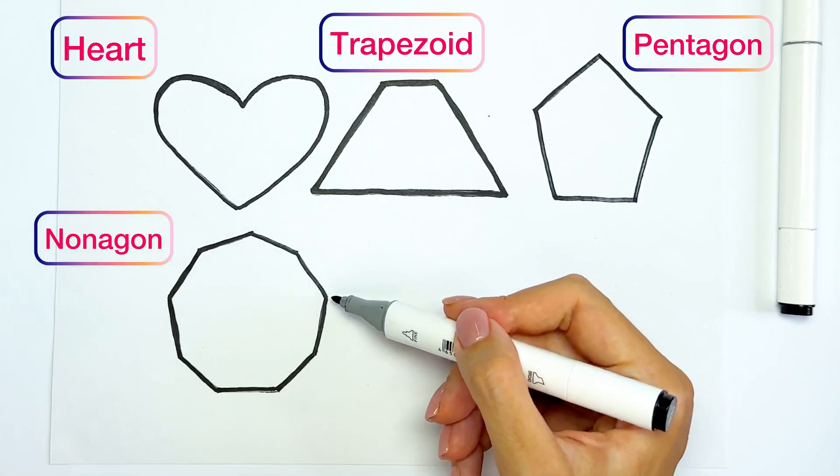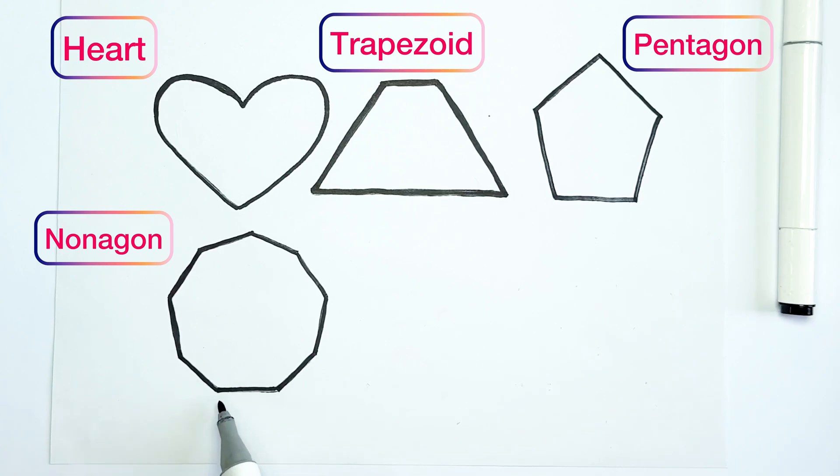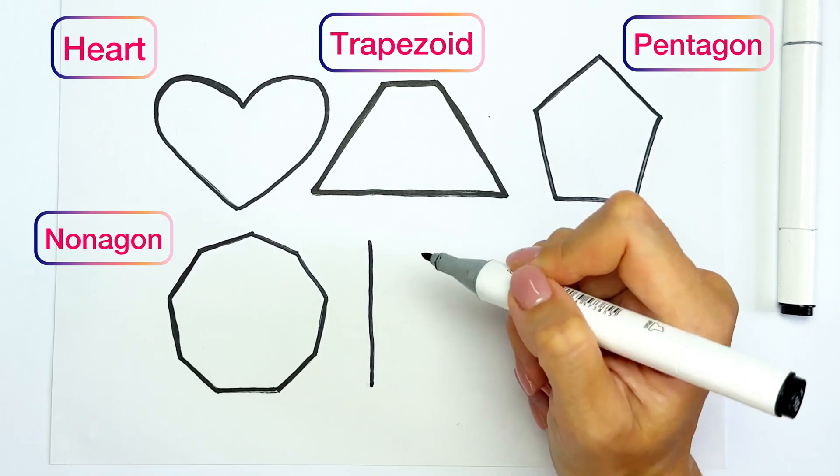One, two, three, four, five, six, seven, eight, nine. Nine angles. The next one is right triangle.